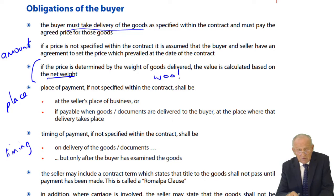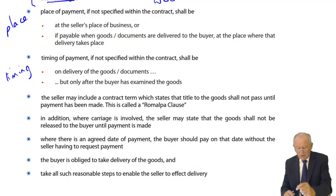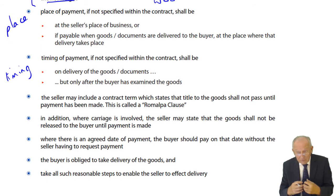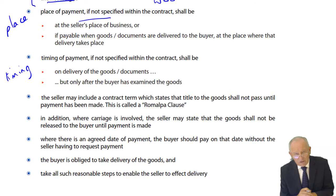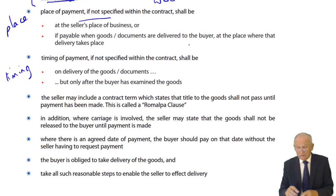Regarding place: the place of payment, if not specified in the contract, is at the seller's place of business, and the seller's responsibilities cease at that point. So the buyer's obligations take effect with effect from ex-works. If there's no place specified, then the sale is effective at the seller's place of business. If price is payable when goods are delivered to the buyer, then payment is due at the place where delivery takes place.